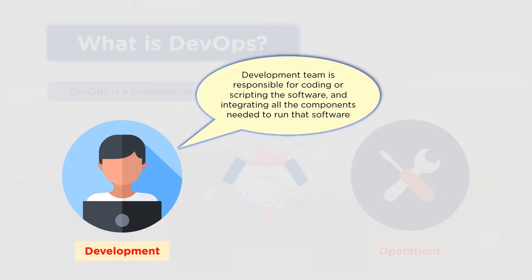The development team is responsible for keeping a particular product up and running. They do the coding, performance work, and interaction with testing to validate the source code. They also use a number of tools — scripting tools, coding tools, development tools — because they may be working with more than one programming language for a project.